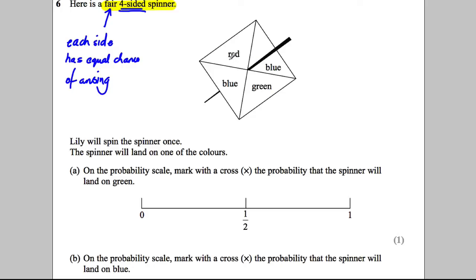So the chance of red — the chance of this corner coming up — is the same as this blue corner coming up, is the same as that green corner coming up, is the same as that blue corner coming up.